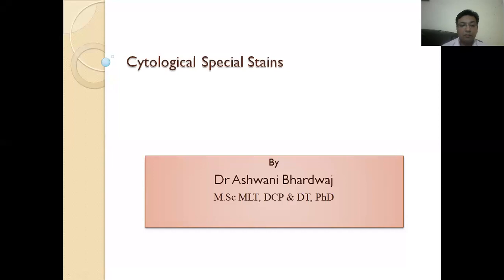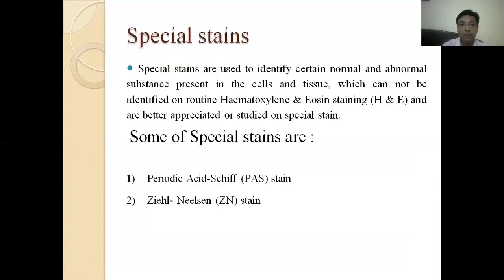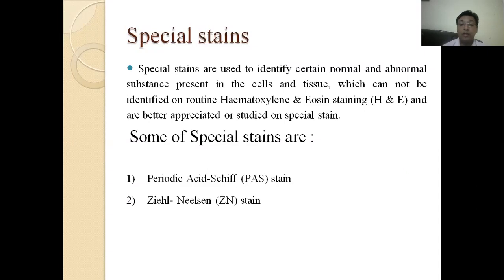Hello listeners, myself Ashwani Bhardwaj, and today my topic of discussion is cytological special stains. First of all, what are special stains? Special stains are used to identify certain normal and abnormal substances present in cells and tissues which cannot be identified on routine staining methods like H&E, and are better appreciated on special stains. The first one is PAS stain, also known as Periodic Acid-Schiff stain.